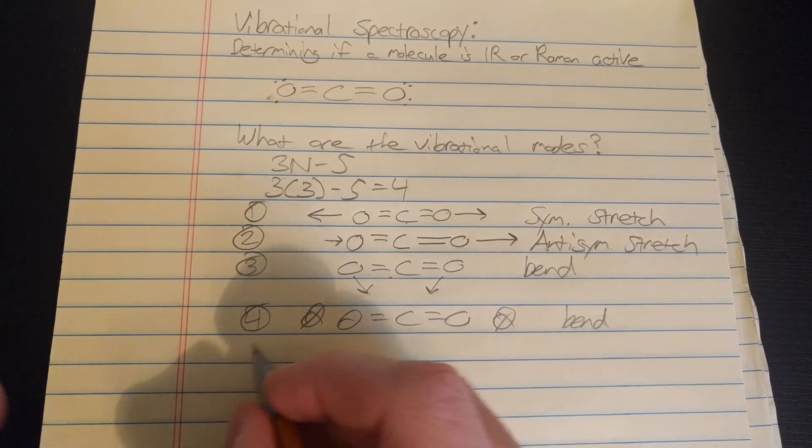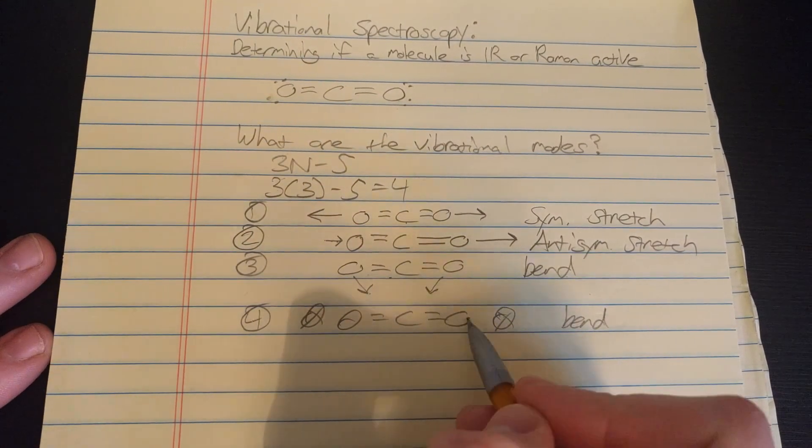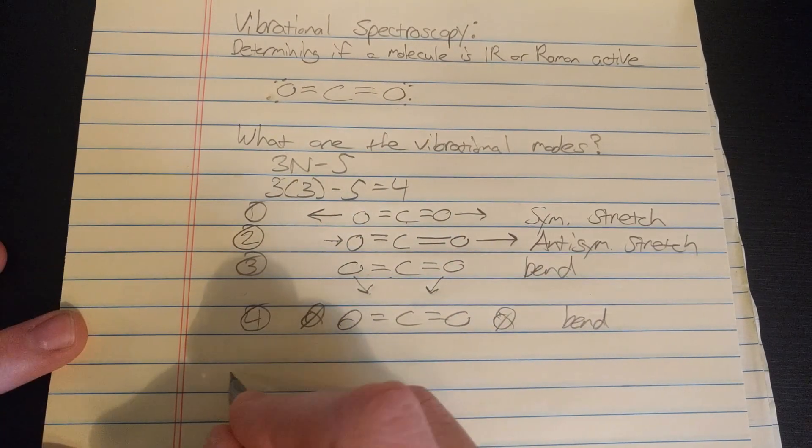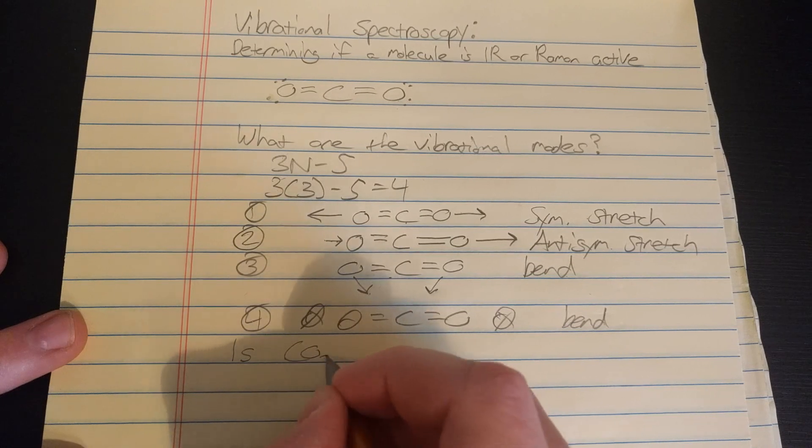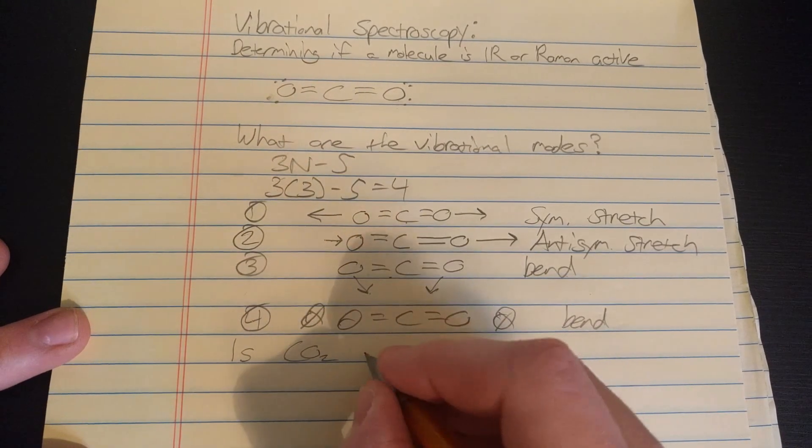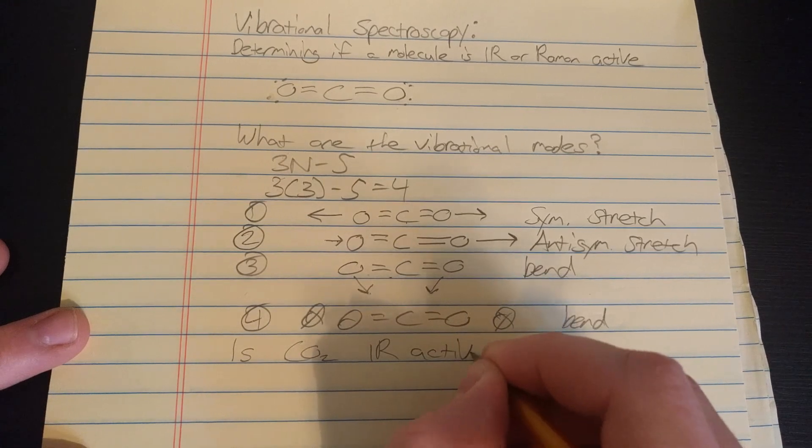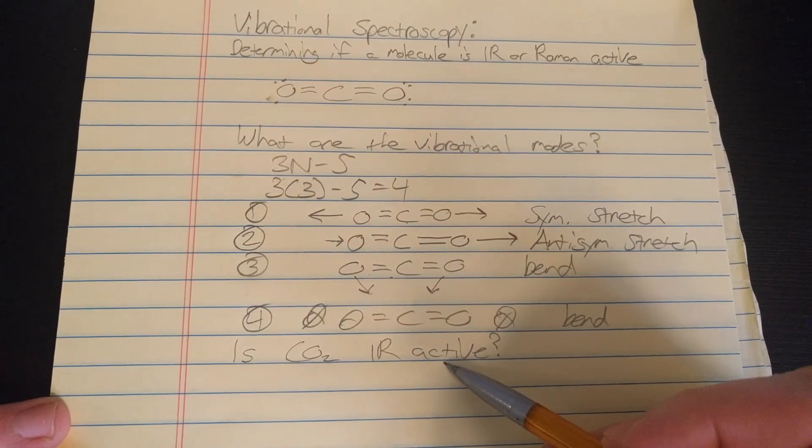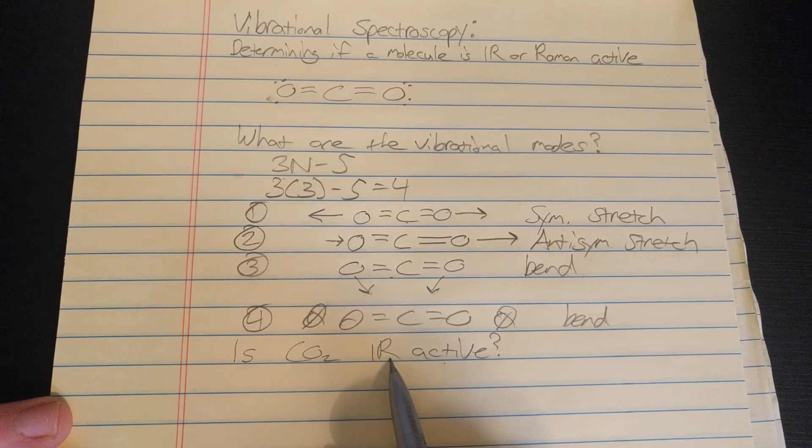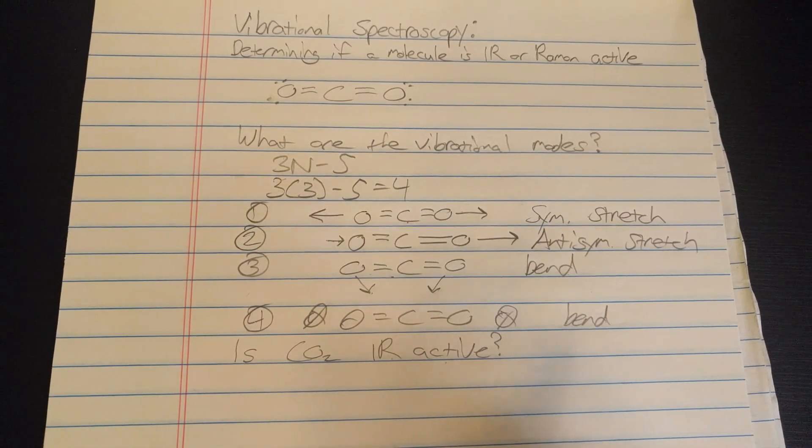Now we want to know if carbon dioxide is IR active. So we're asking is CO2 IR active. Well that's the same as saying what are the selection rules for carbon dioxide.